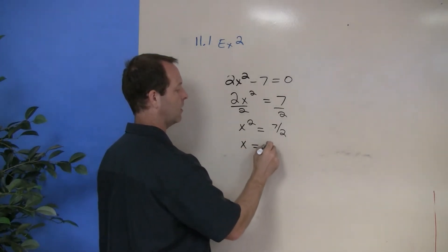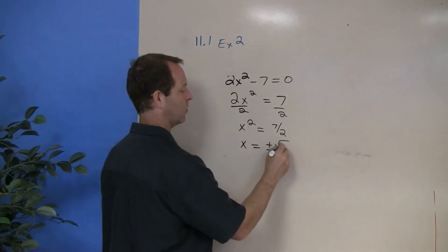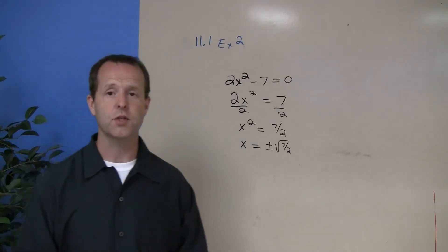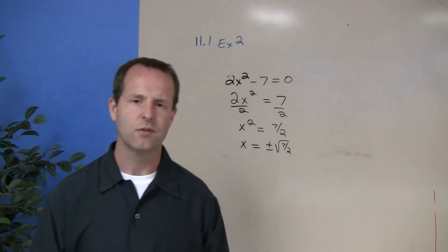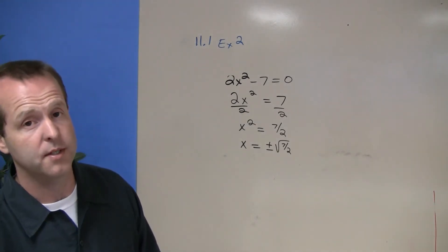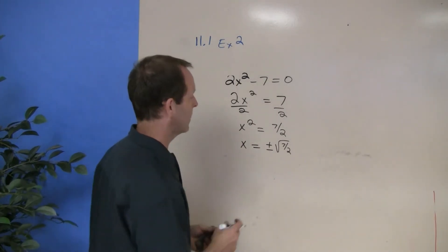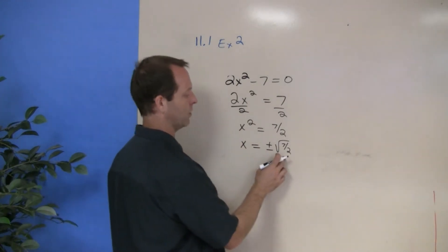So x equals plus or minus the square root of 7 halves, and there's my solution. However, we remember that the square root of 7 halves is not in reduced form because I have a square root in the denominator.